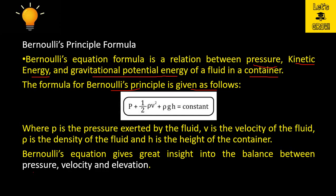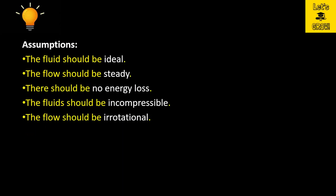The Bernoulli equation gives great insights into the balance between pressure, velocity, and elevation. There are three terms — the first for pressure, the second for velocity, and the third for elevation. When deriving Bernoulli's equation, certain assumptions must be taken care of. The first assumption is that the fluid should be ideal, meaning the viscosity of the fluid should be zero — there is no resistance between the flow of the fluid.